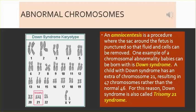Abnormal chromosomes. An amniocentesis is a procedure where the sac around the fetus is punctured so that fluid and cells can be removed. One example of a chromosomal abnormality babies can be born with is Down syndrome. A child with Down syndrome has an extra copy of chromosome 21, resulting in 47 chromosomes rather than the normal 46. For this reason, Down syndrome is also called Trisomy 21 syndrome.